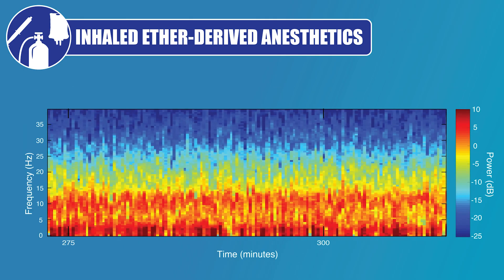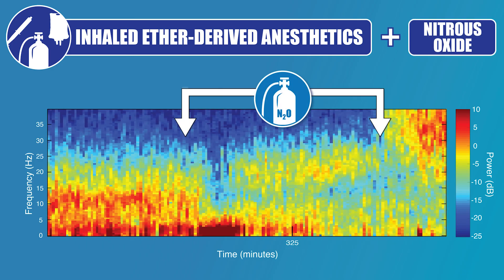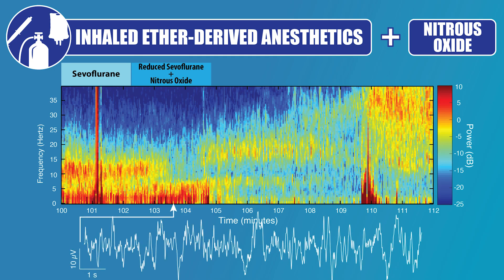When using an inhaled ether-derived anesthetic with oxygen for maintenance of general anesthesia, during closure of the surgical incision, switching to a high concentration of nitrous oxide with oxygen at a high total flow rate is a common practice. This is done because it can help facilitate a quicker emergence and recovery from general anesthesia. Consider this EEG spectrogram showing the end of a case where the patient was being transitioned from sevoflurane to nitrous oxide. When the sevoflurane is decreased and the nitrous oxide starts, the pattern changes from our typical ether-derived anesthetic pattern to a profound slow delta oscillation, with a near-complete loss of power above approximately 10 Hz.